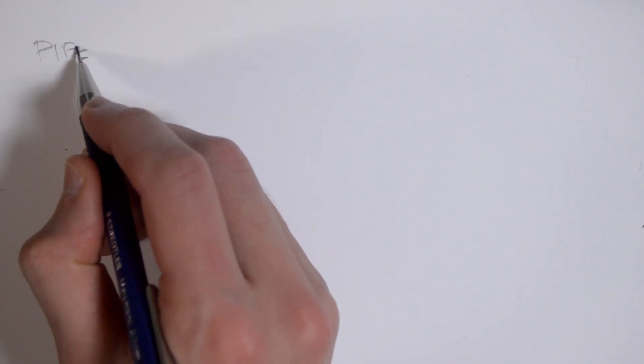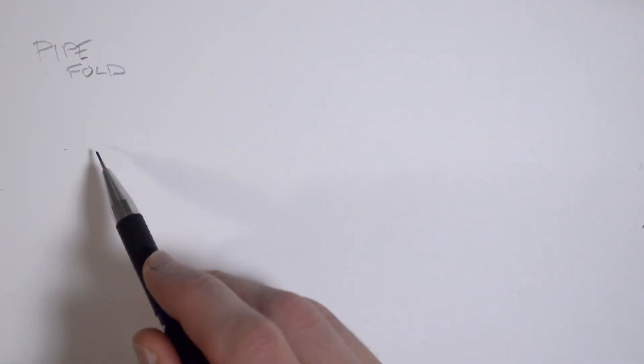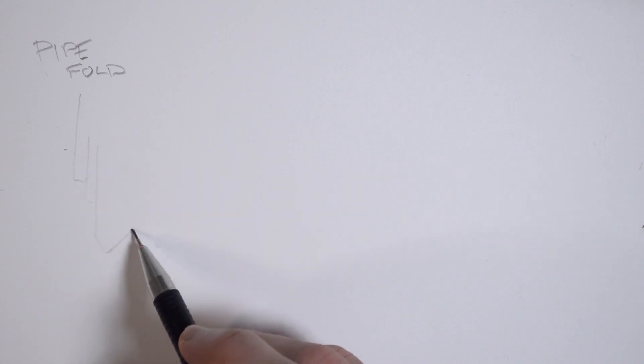Hey everybody, welcome back to another episode of the Sketch Adventure. On today's episode we're going to be taking a look at folds and drapery. I'm going to be doing a demo of each of the seven types of folds that I think about when painting fabric.